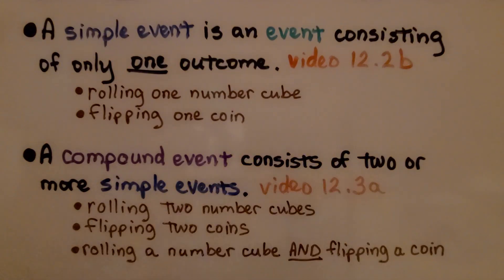Back in lesson 12.2b, we learned a simple event is an event consisting of only one outcome. Examples would be rolling one number cube or flipping one coin. These are simple events.